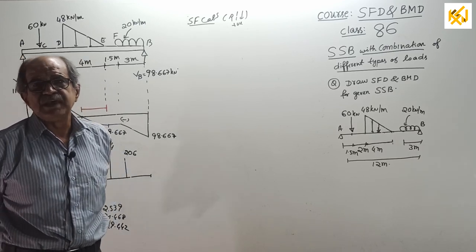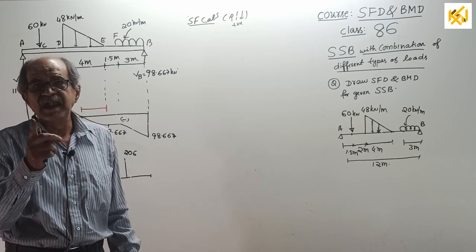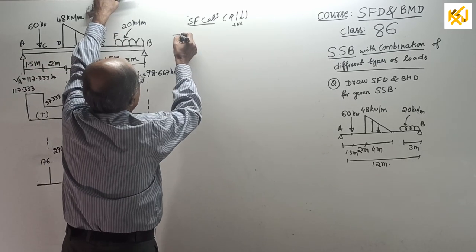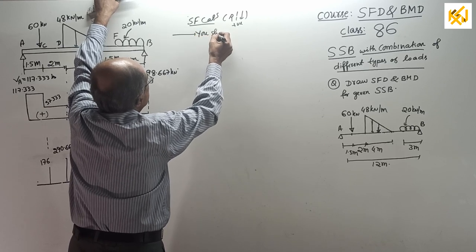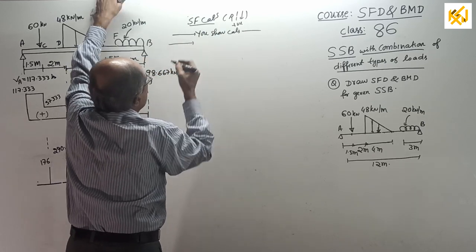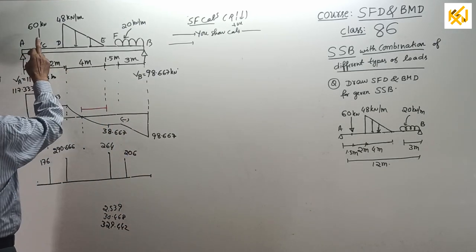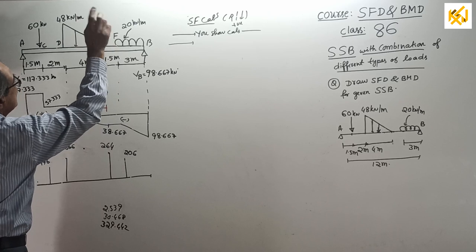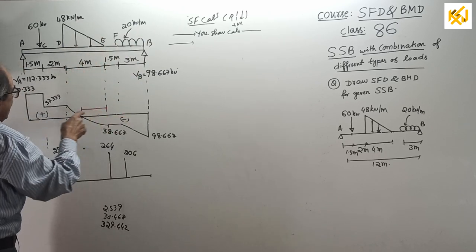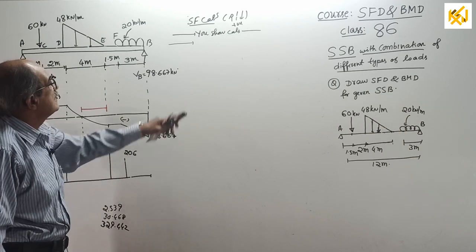Shear force just right of A: plus 117.333. At C: same. Just right of C: 117.333 minus 60 equals 57.333. At D: same. Just right of D: 57.333 minus half into 4 into 48 equals minus 38.667. Shear force at E: same answer, no change. Then at F: 38.667 minus 20 into 3 equals minus 98.667. Now onwards most questions, shear force calculation I am not writing. Those who are sincere and hardworking, I will dictate in class. Variation of shear force: A to C constant, C to D constant, E to F constant, F to B linear, D to E parabola. Why parabola this way? Here more slope, maximum slope; here zero slope.